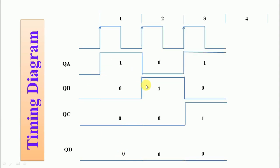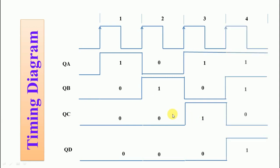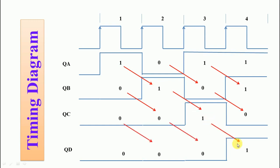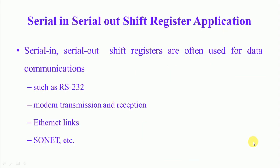After the second clock pulse, the first bit is shifted to the second flip-flop. After the third clock pulse, it is shifted further to the third flip-flop. After the fourth clock pulse, it is shifted to the fourth flip-flop output. Each subsequent data bit follows the same pattern through the register. After the fourth clock pulse, the output data is available. Serial-in serial-out shift registers are used in various data communication applications such as RS-232, modem transmission and reception, Ethernet links, and so on.